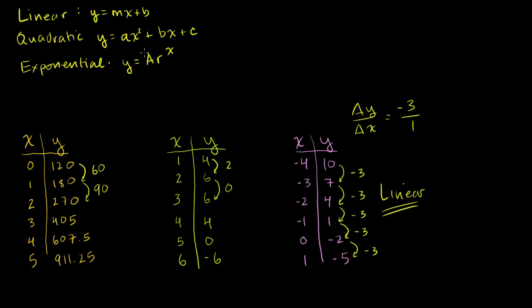For quadratic, there's an interesting trick — I haven't shown you why it works yet, but in a quadratic the changes in y are not going to be constant, as was the case for linear. However, the change in the changes of y will be constant. That is, the second differences are constant. When you see the example, it'll make sense.